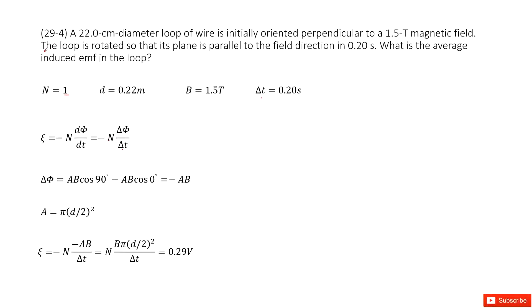So it tells us the loop is rotated so that its plane is parallel to the field direction. So that means initially the magnetic flux is zero. Initially the angle theta is zero, because it tells you oriented perpendicular.